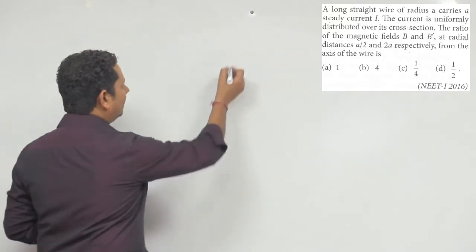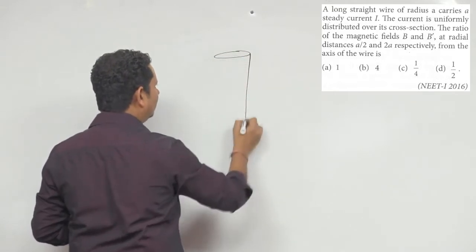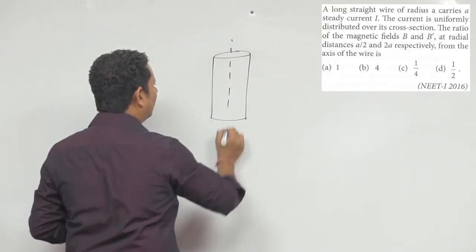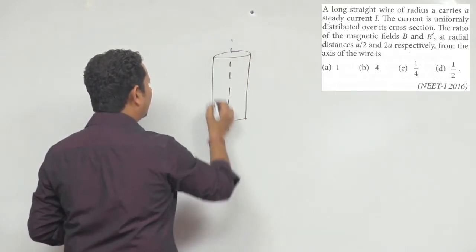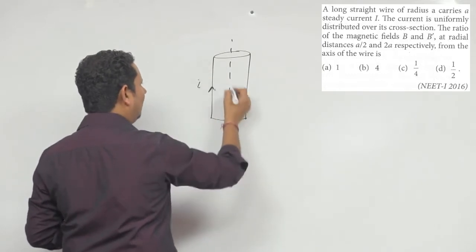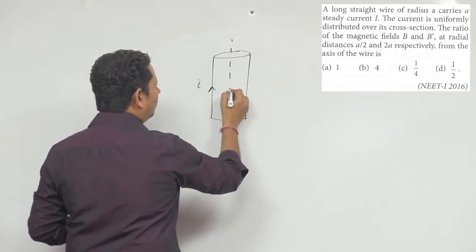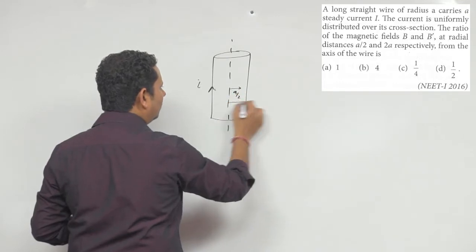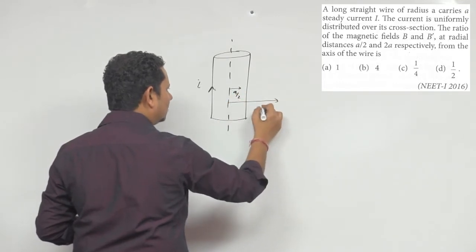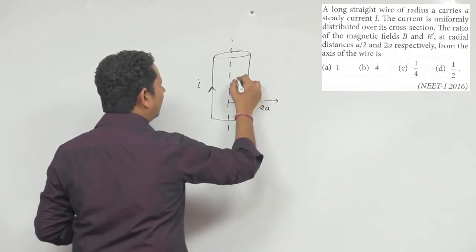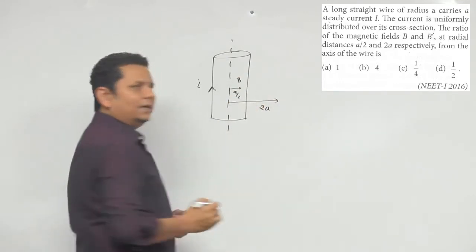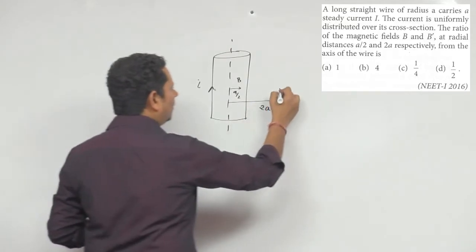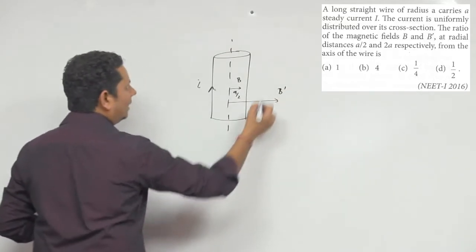यहां पर बात कर रहे हैं — मान लीजिए यह आपकी कोई wire है, और इस wire में आपका steady current I इस प्रकार flow कर रहा है। तो आपको दो जगह magnetic field बतानी है: एक point a/2 पर और दूसरा point 2a पर। यहां पर magnetic field को हमने B कहा है और वहां वाली को B dash।